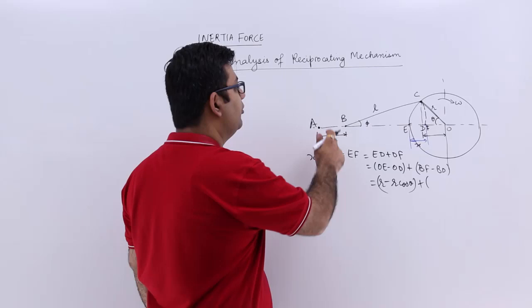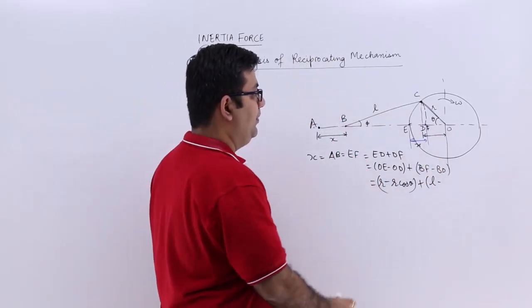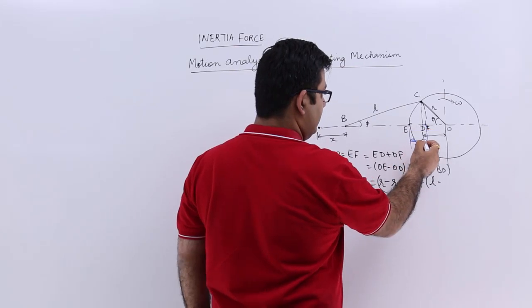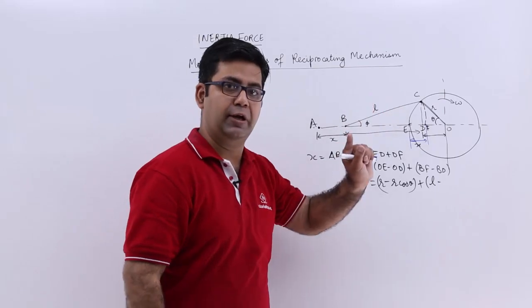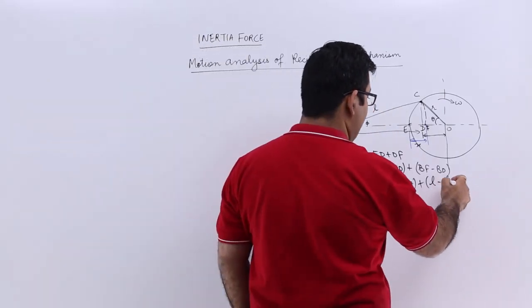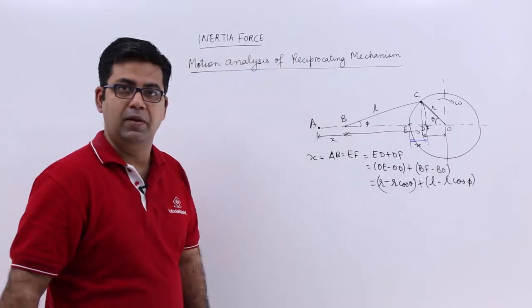BF I told you is equal to BC which is L minus BD. BD, this much length, this is the cos component of the length of the connecting rod. So this becomes minus L cos phi.